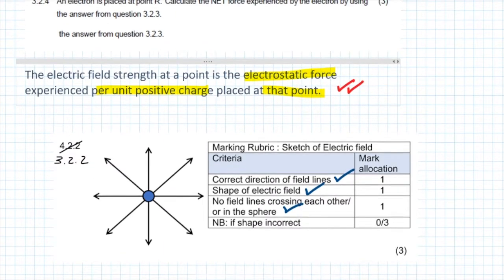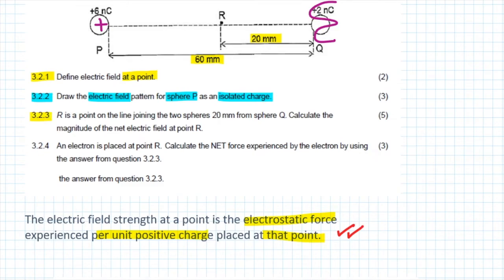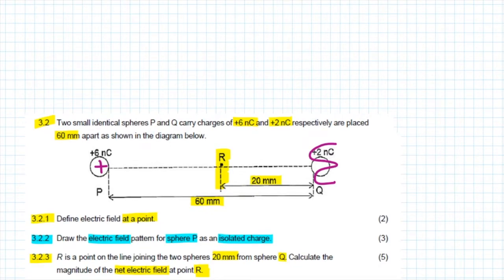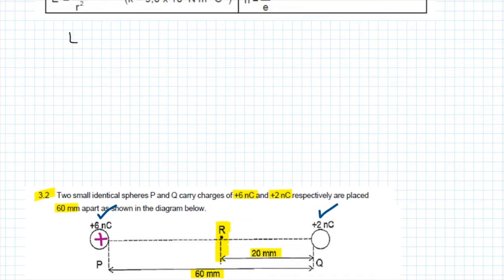Please be careful and make sure that you obey all of the rules that we apply to electric field lines. Now we go on to question 3.2.3. It says: R is a point on the line joining the two spheres, 20 mm from sphere Q. Calculate the magnitude of the net electric field at point R. In order to do so, we're going to first find the electric field at R as a result of P, then the electric field at R as a result of Q, and then use vector addition to determine the net electric field at R. So step number one, E is equal to KQ divided by R squared.